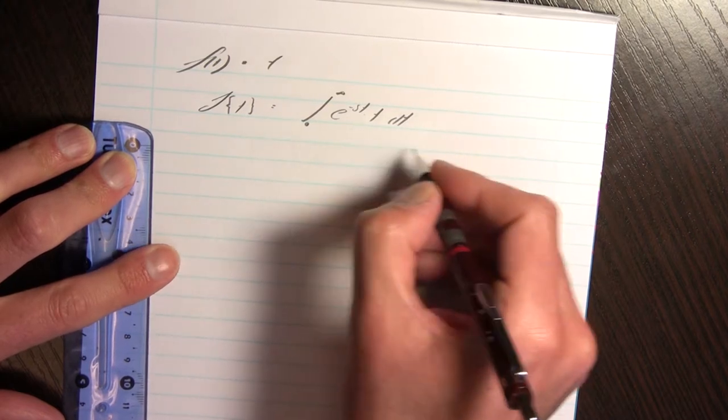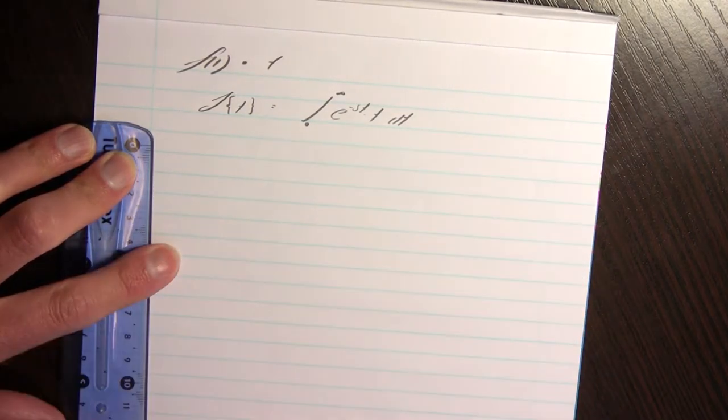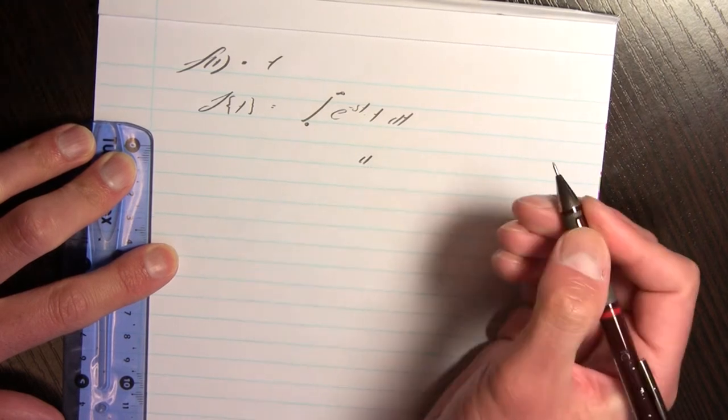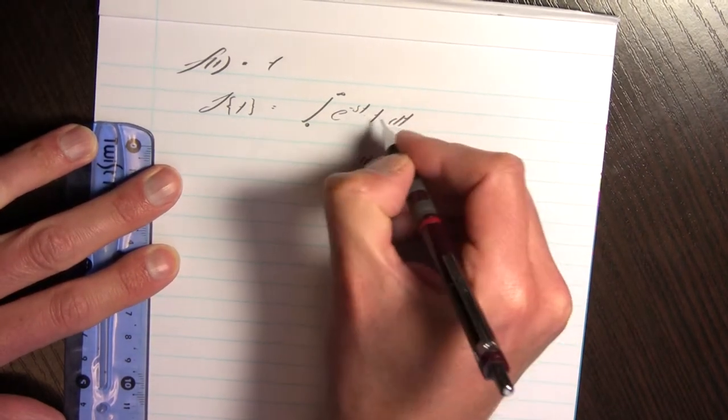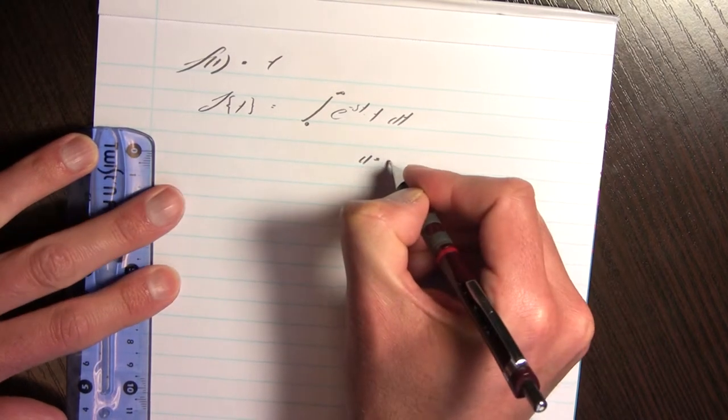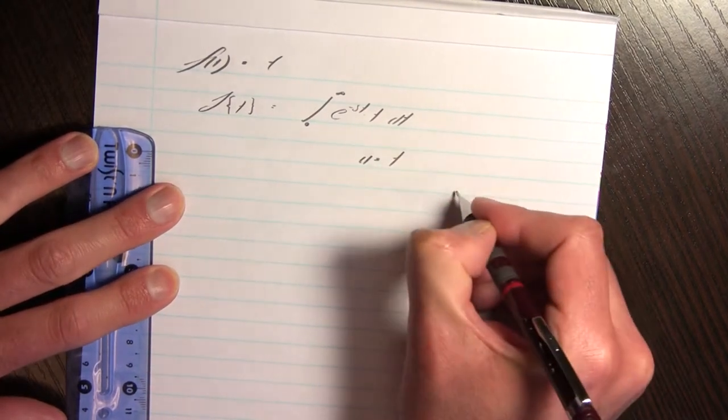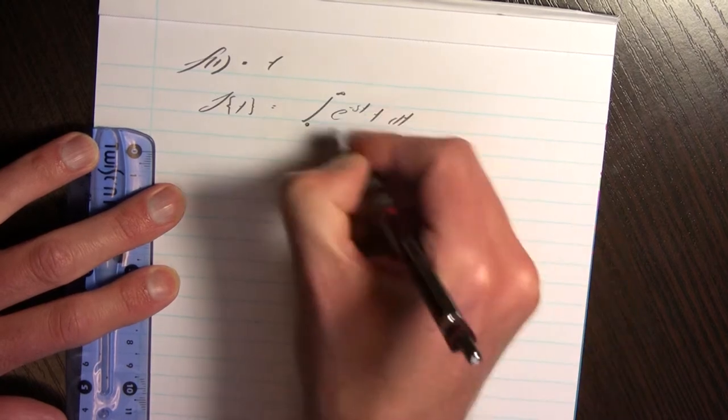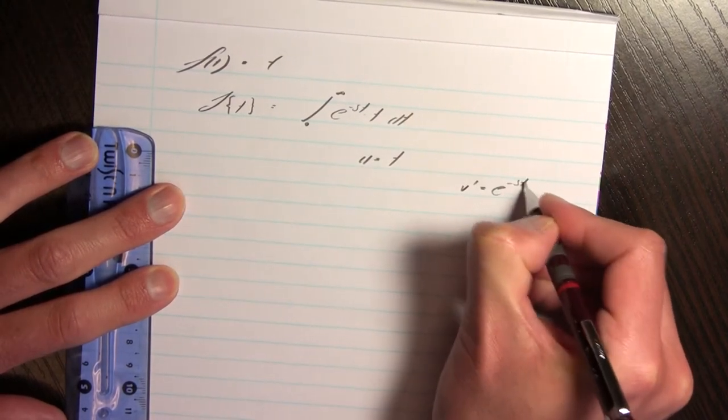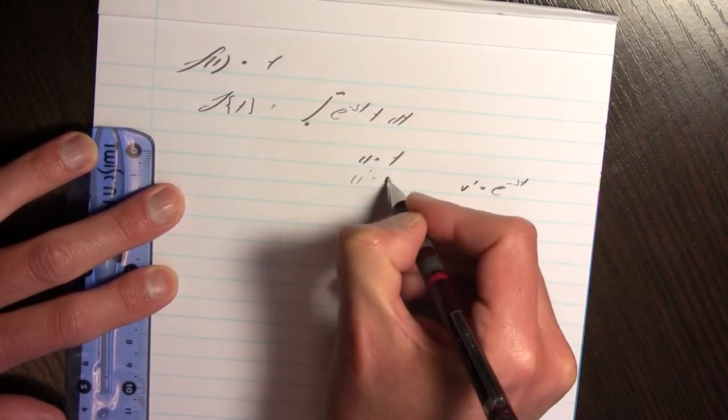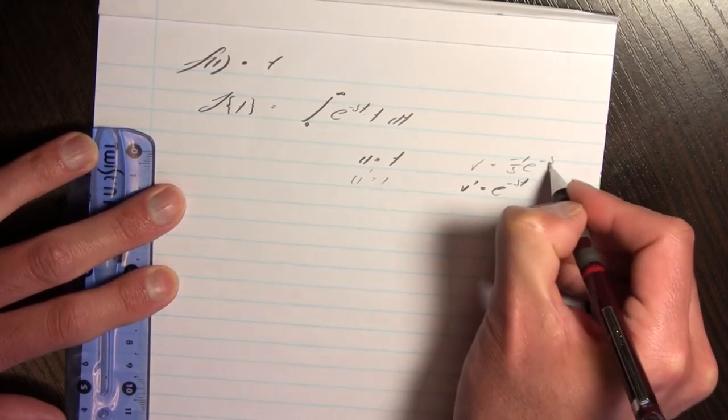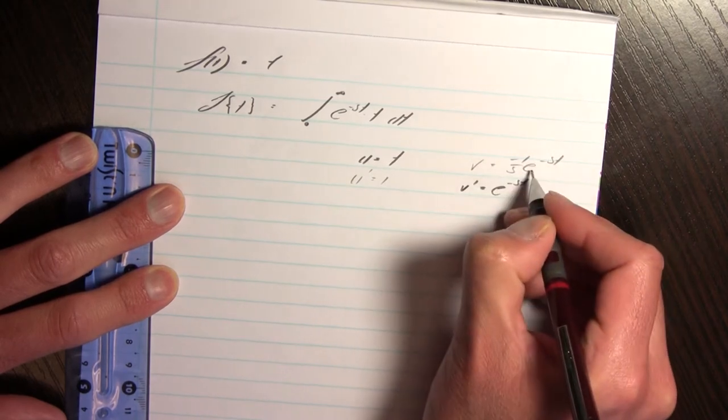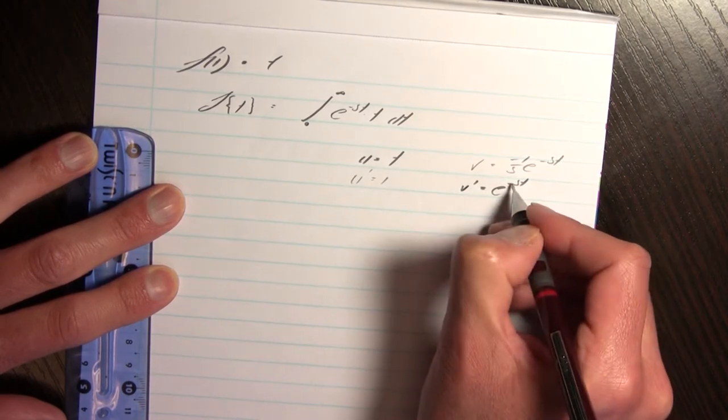In other words I better use integration by parts here. Let u be t and dv be e to the power negative st. That makes u prime equal to 1 and that means v should be negative 1 over s e to the power negative st. If I take the derivative of that with respect to t I'm going to end up with that.